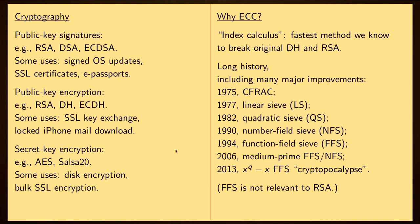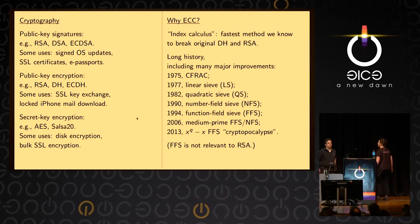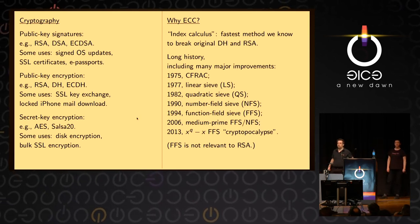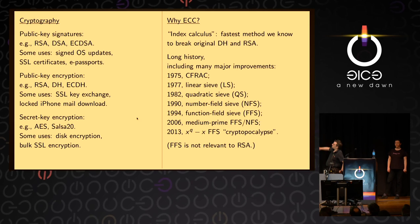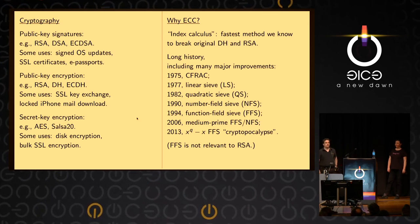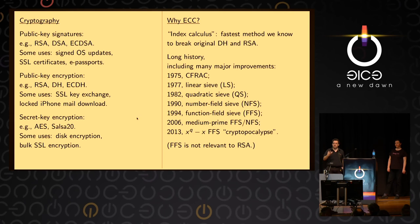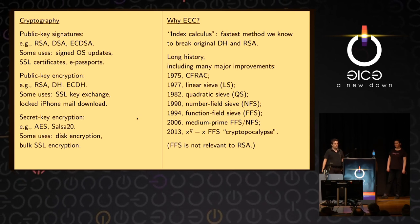The basic answer is an attack strategy called index calculus. If you want to factor somebody's RSA keys, or break somebody's original non-elliptic Diffie-Hellman, then you use index calculus. It keeps getting faster and faster, so we don't even know how fast it's going to end up being. Here's some history: 1975 was one of the first index calculus algorithms, CFRAC, for factoring big numbers. There were advances in 1977, 1982, 1990, 1994. There's been a cryptocalypse — one of the newest advances in index calculus — and this general strategy keeps getting more refined, more sophisticated, and faster.